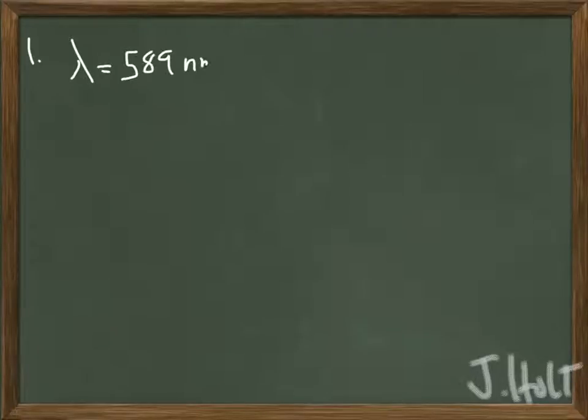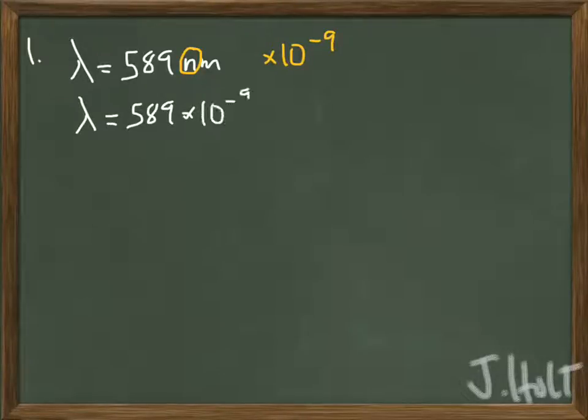All right guys, let's take a look at number one. We are given the wavelength of the light, and it's given in nanometers. Nanometers means times 10 to the negative 9th meters. That's what the prefix nano means. So I'm just going to go ahead and rewrite it in terms of meters.